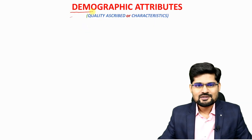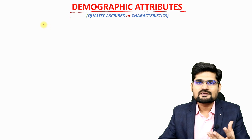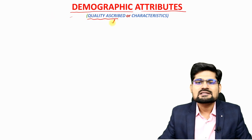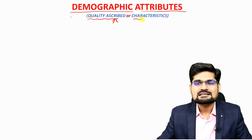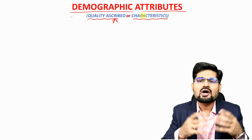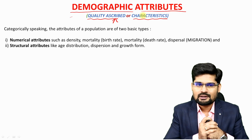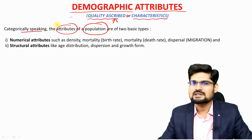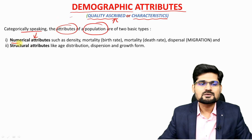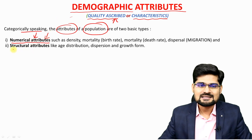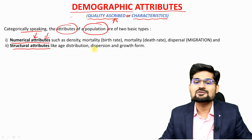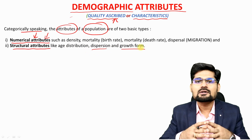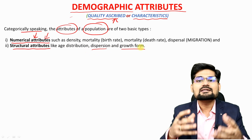Let's learn about demographic attributes. Demography is basically the study of population and its various aspects. When we say attributes, it means the quality which is ascribed or associated with — the nature or characteristics of demography. Categorically, if we look into the two aspects of population, two attributes can be grouped into two segments: numerical attributes, that is quantitative, and structural attributes, which cover age distribution, dispersal patterns, migration and other forms of growth.